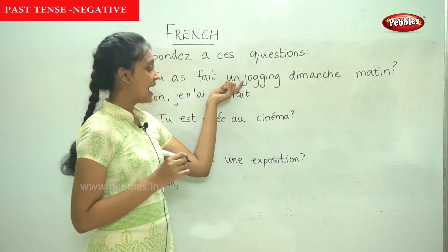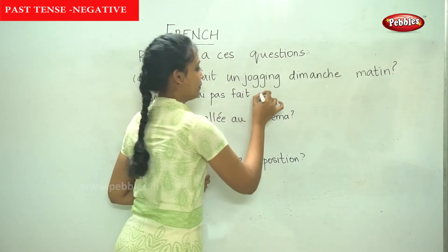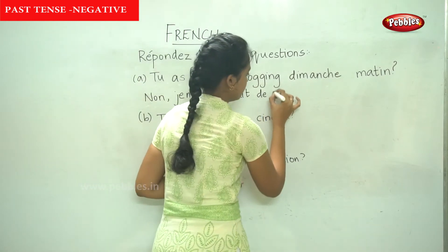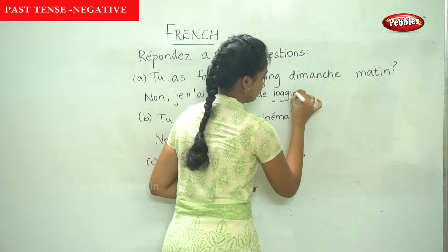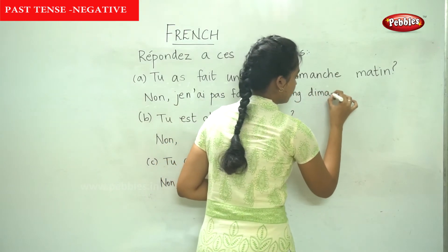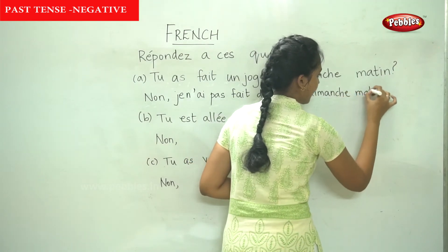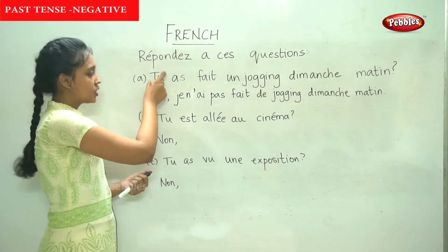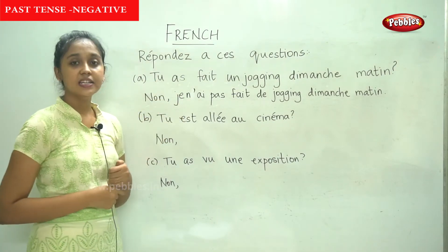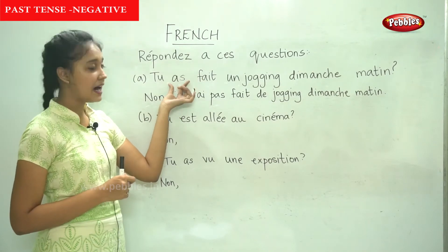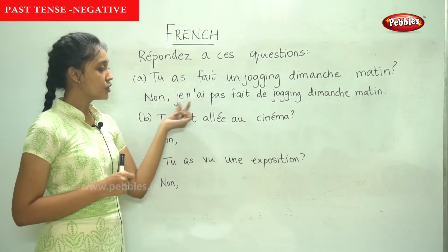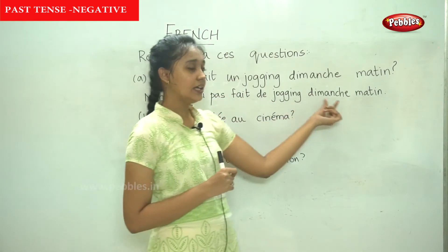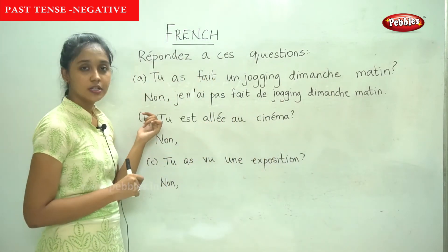And here, all the indefinite articles become 'de'. So un, une, or du becomes de. To summarize: we answer the question, change the subject, and add ne before and pas after the auxiliary, which is avoir. For je it is ai — je n'ai pas fait de jogging dimanche matin. Let us move on to the next sentence.